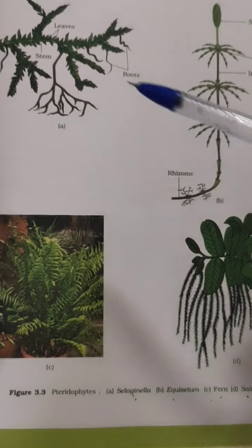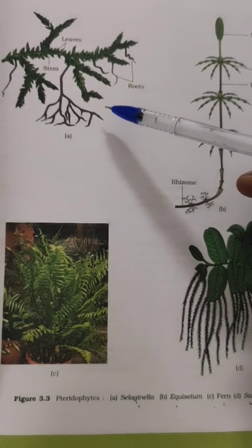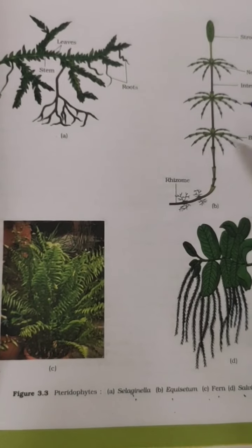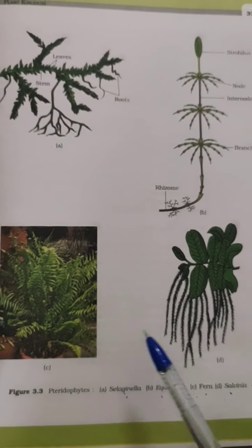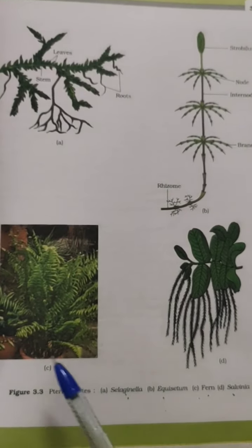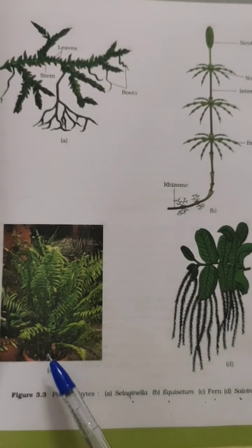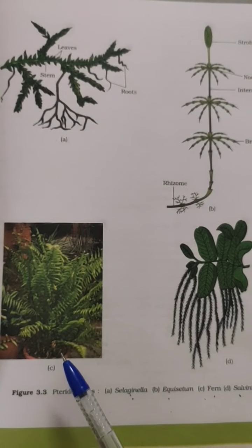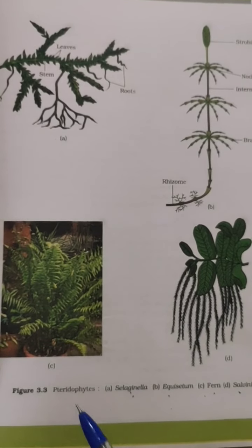Some examples of pteridophytes are Selaginella, Equisetum, fern, and Salvinia. These ferns are also used as decorative items at our homes.